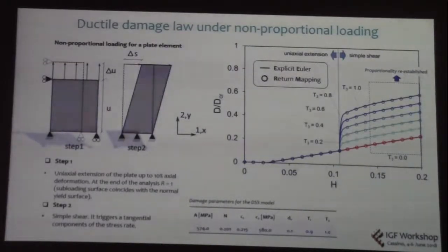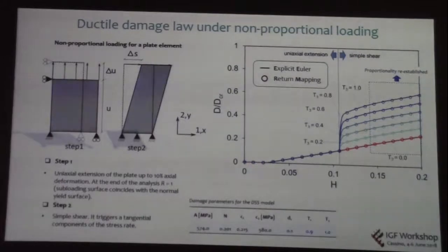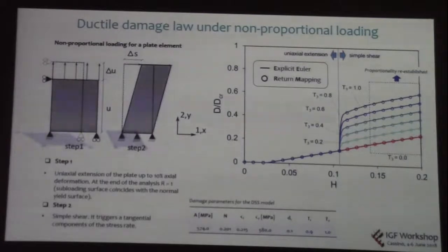To show how the model works, we suggest a simple two-step test. The first step is an axial test of a plate up to 10% axial deformation, to induce a fully plastified state for the material. After that, we induce a simple shear to trigger a non-negligible component of the stress rate. According to the material constant T3, we are able to take into account plastic stretching along the tangent, which contributes to damage evolution. Importantly, the boost of damage is uniquely dependent on the loading condition: whenever coaxiality between the principal stress and strain direction is established, as in a proportional loading path, the damage evolution is equal for all cases, meaning there is no additional contribution of the tangential stress rate.